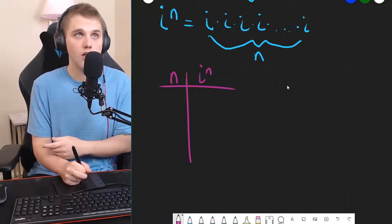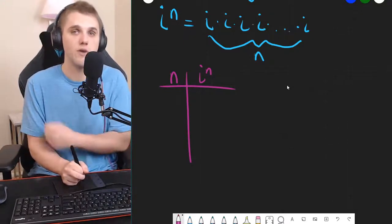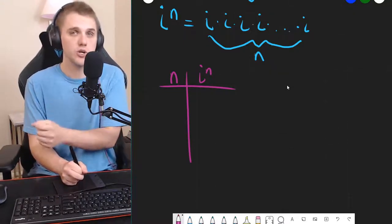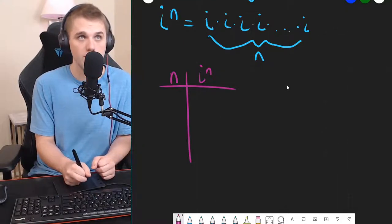So, here in the left column, I'm going to pick some integers for n, and on the right column, we're going to try to figure out what i raised to that power is in terms of its real and imaginary parts. So, let's start with some easy n values.